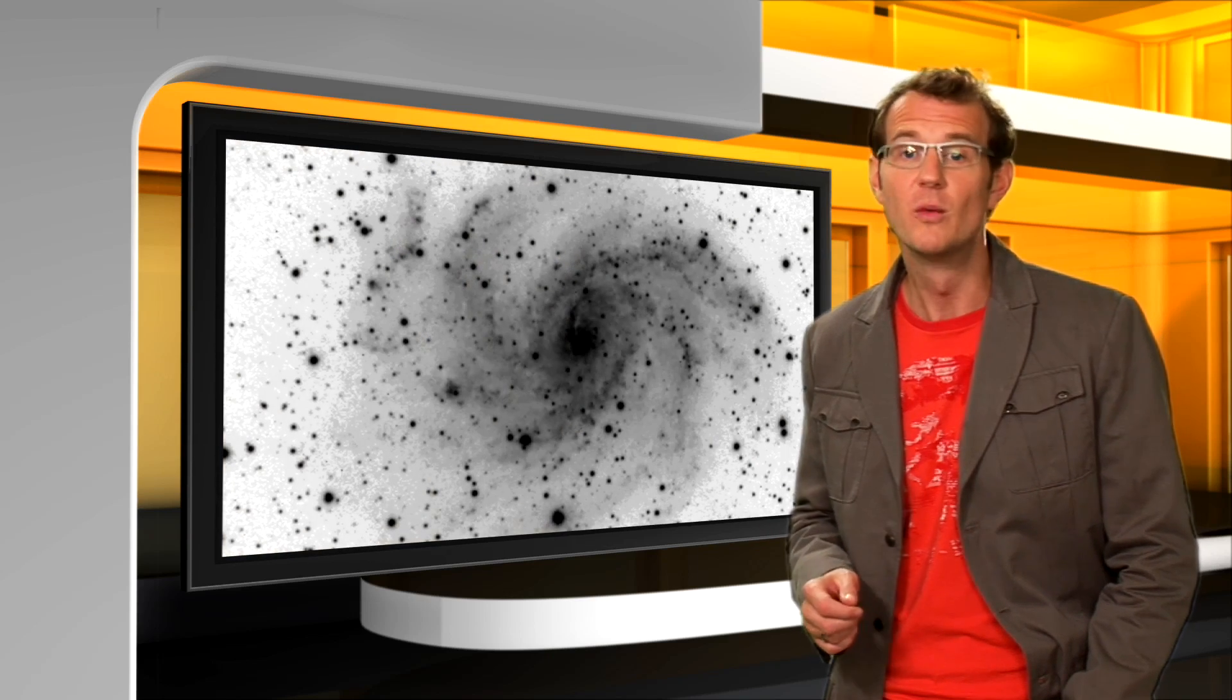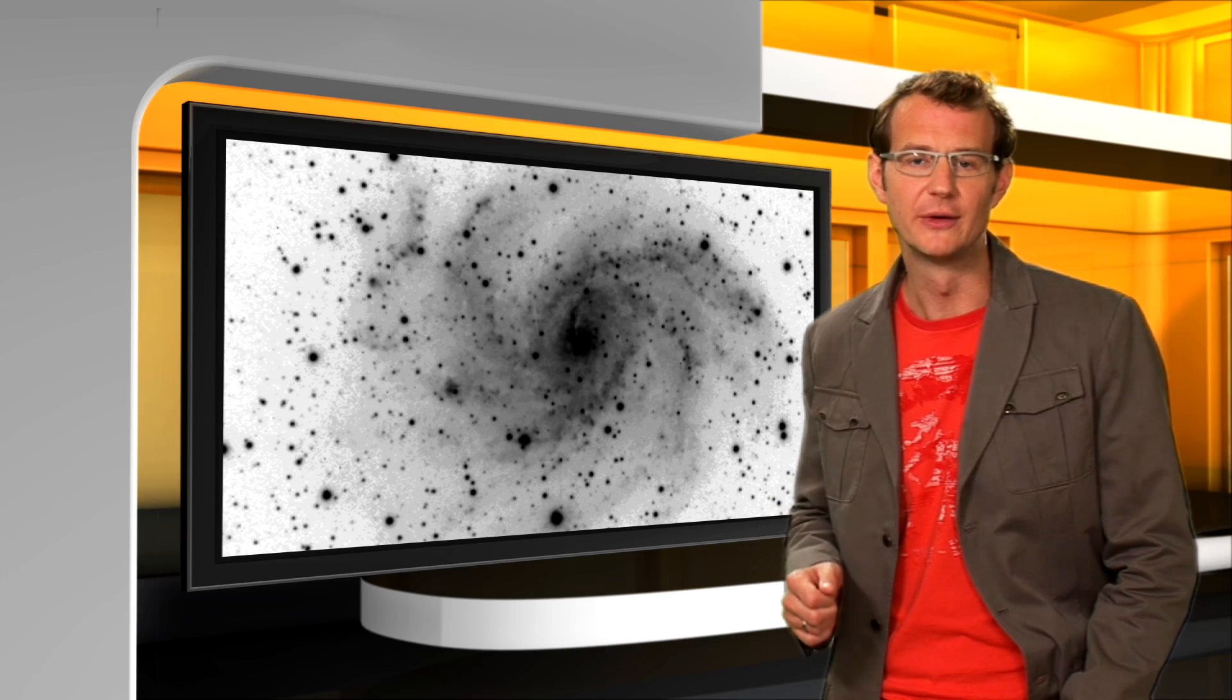So how did photography work? Well, the sensitive emulsion of a photographic plate contained small grains of silver halide. Expose them to light, and they turned dark. So the result was a negative image of the sky, with dark stars on a light background.